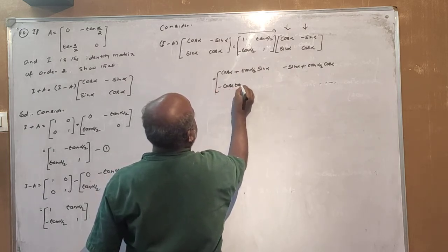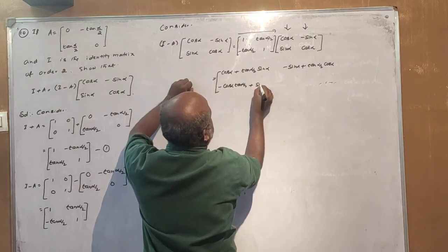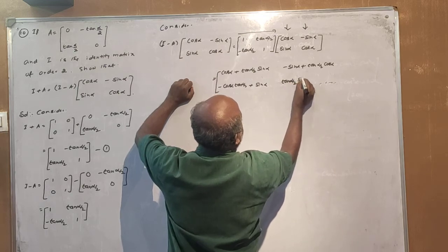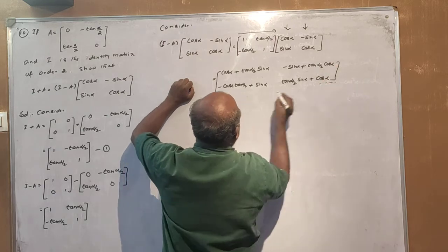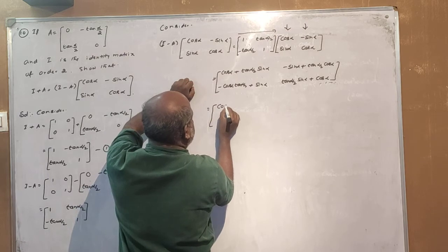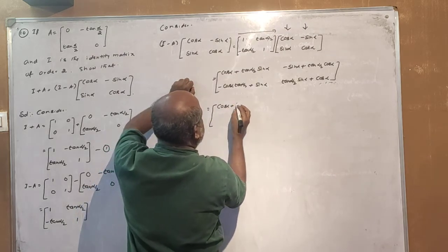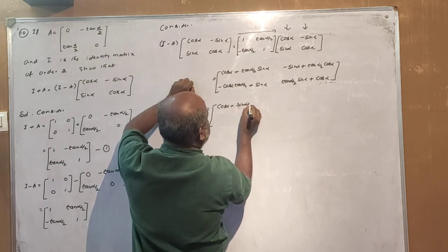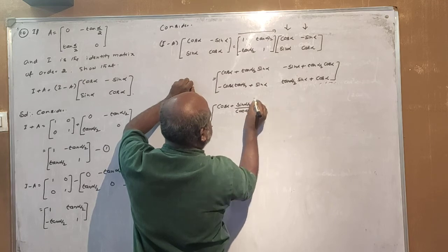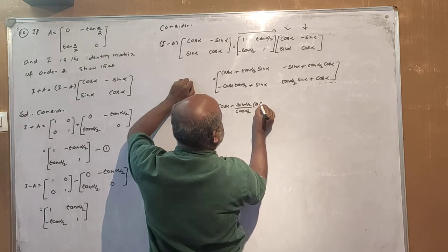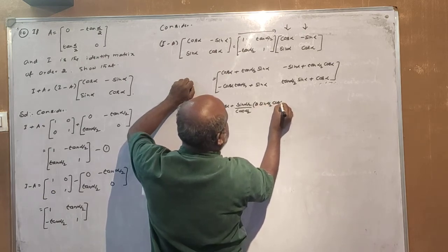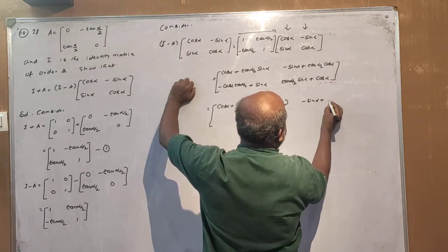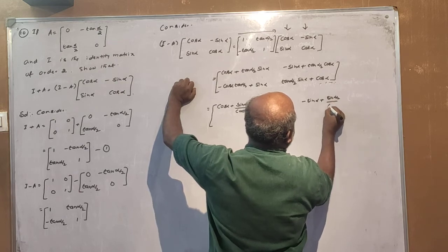Minus cos(α/2) times tan(α/2) plus sin(α). This simplifies: minus times minus gives plus 2 tan(α/2) into sin(α) plus cos(α). This equals cos(α) plus sin(α) times tan(α/2), that means sin(α/2) divided by cos(α/2) into sin(α), which means sin(α/2) times sin(α/2).